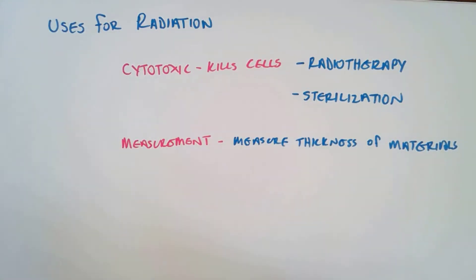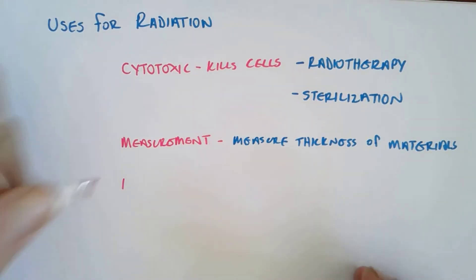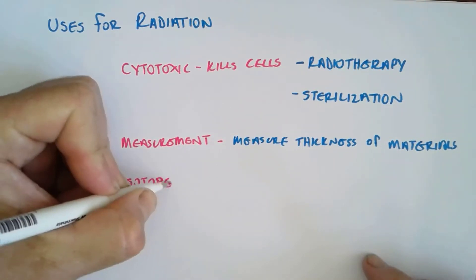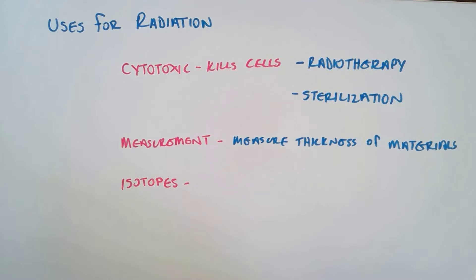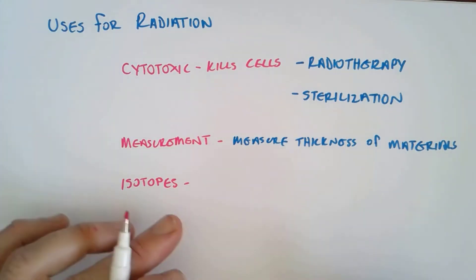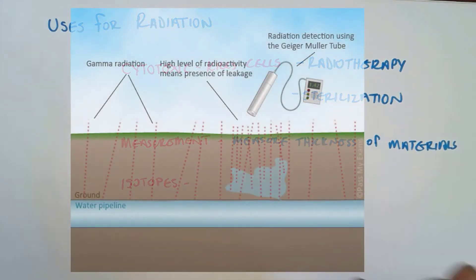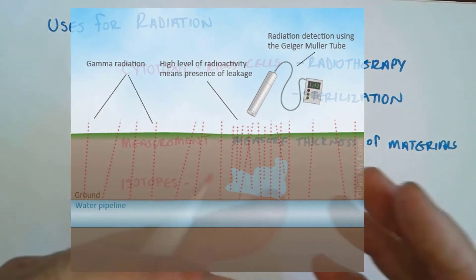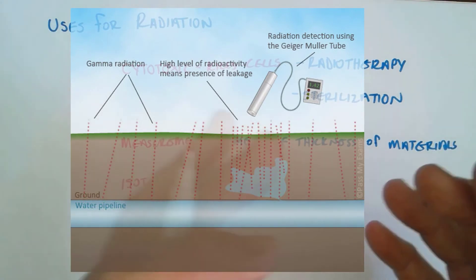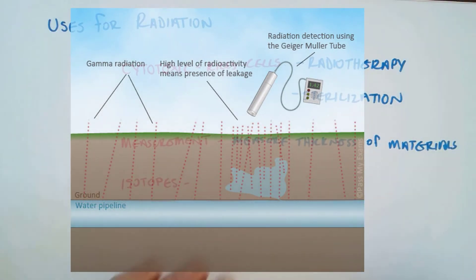Because we've got isotopes — different types of the same element — what they can do is use isotopes and detect them through a system. For example, they might use a heavier radioactive isotope of hydrogen and put it into water, then follow that water through a water system or a sewage system to be able to identify where leaks are. So they can detect the presence of the water by the radioisotopes.